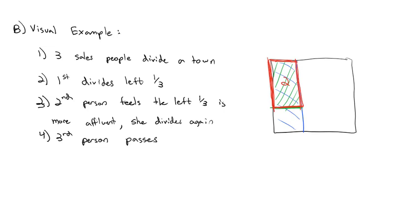That piece belongs to person number two. Person one is okay because it looks smaller than a fair share to that person. Person three is okay because they've already had a chance at it and they passed. Person two is happy because they cut it. Everyone's happy.